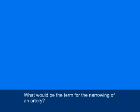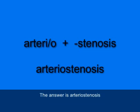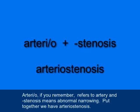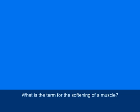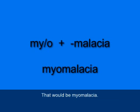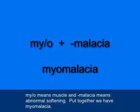What would be the term for the narrowing of an artery? The answer is arteriostenosis, A-R-T-E-R-I-O-S-T-E-N-O-S-I-S. Arterio refers to artery, and stenosis means abnormal narrowing. What is the term for the softening of a muscle? That would be myomalacia, M-Y-O-M-A-L-A-C-I-A. Myo means muscle, and MALACIA means abnormal softening.